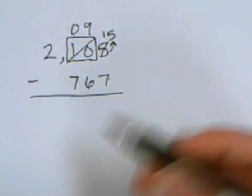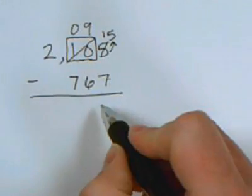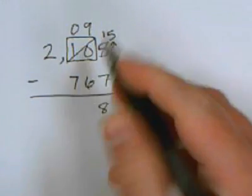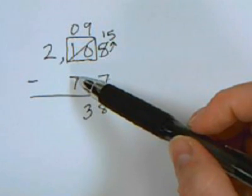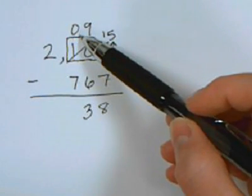So now we can do 15 minus 7 is 8, 9 minus 6 is 3. Now here's where the next problem comes in. I can't take 7 from 0.